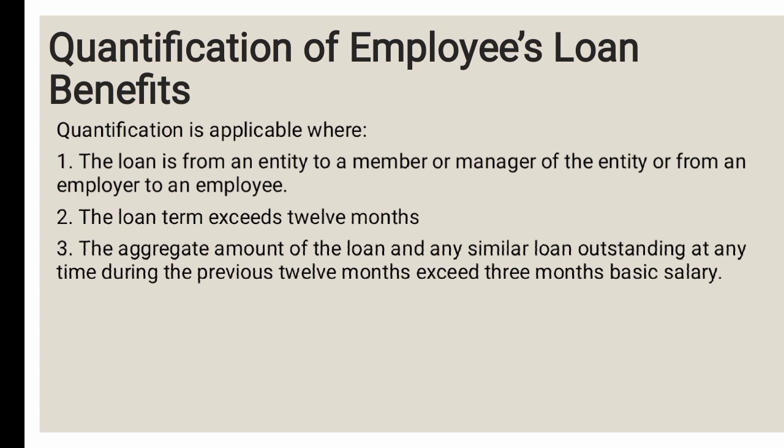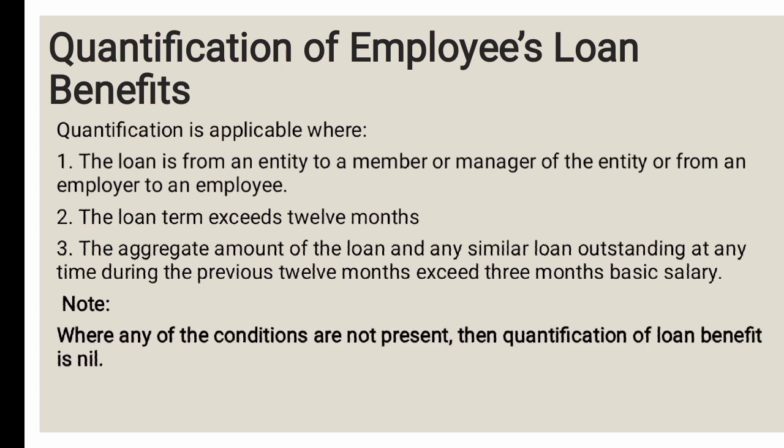In a case where all three conditions are not present — or if even one of them is absent — we will not quantify. Note: if any of the conditions are not present, the quantification of loan benefit is nil, meaning zero.